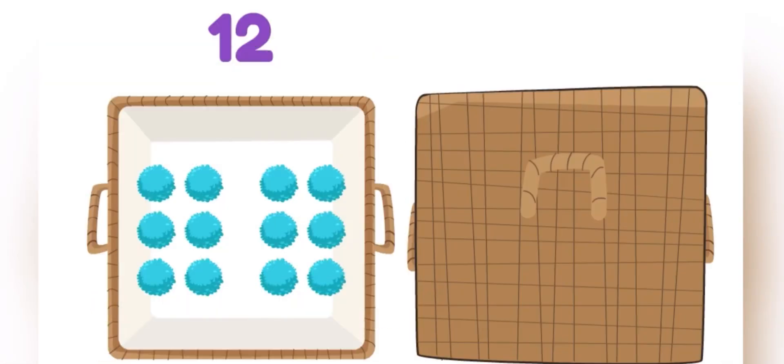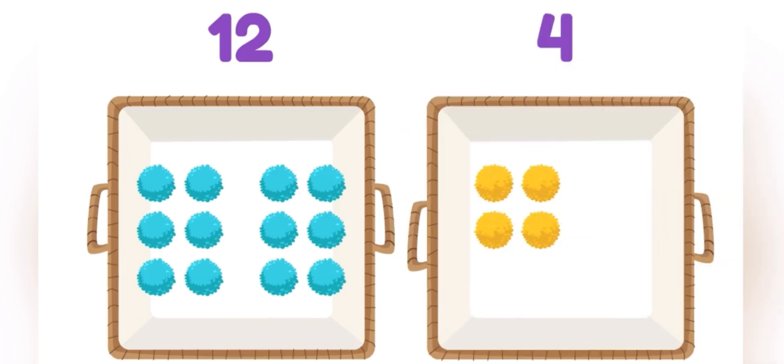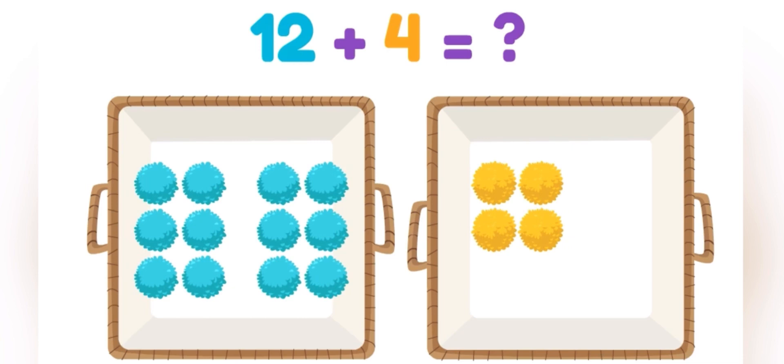There are twelve blue pom-poms in this container and four yellow ones in this container. How many pom-poms are there all together? Twelve plus four is sixteen!